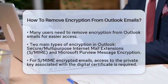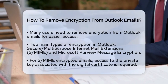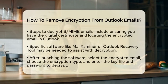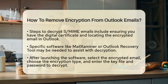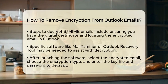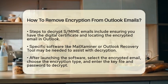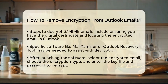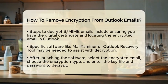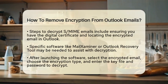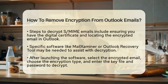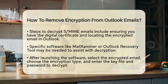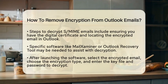For emails encrypted with Secure Multipurpose Internet Mail Extensions, you will need access to the private key associated with the digital certificate used for encryption. Start by ensuring you have the digital certificate. Open Outlook and locate the encrypted email you want to decrypt. You may need to use specific software like Mail Xaminer or Outlook Recovery Tool.